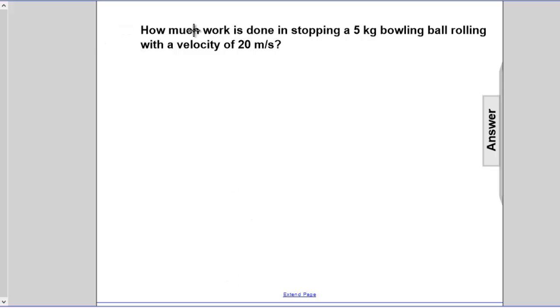All right, in this question, we're going to be solving for the work that is done in stopping a 5-kilogram bowling ball rolling with a velocity of 20 meters per second.